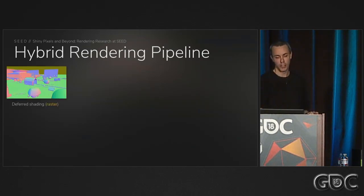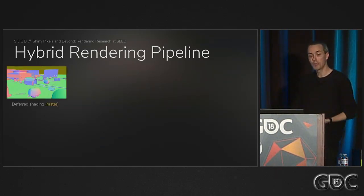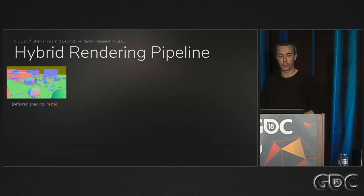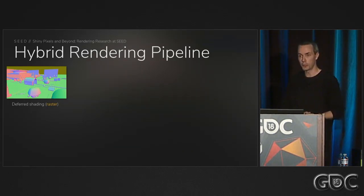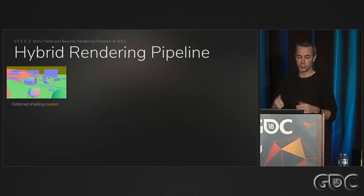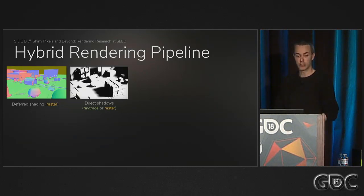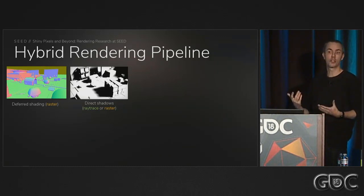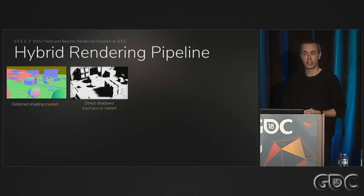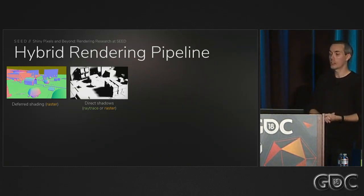We start with traditional rasterization — we rasterize the G-buffer and render it out. It's pretty fast and simple, and GPUs have been optimized for this for a long time. Once we have the G-buffer and Z-buffer, we calculate shadows — we primarily just have the sunlight in the scene — and we can do that through classical rasterization like cascaded shadow maps, or we can ray trace them.